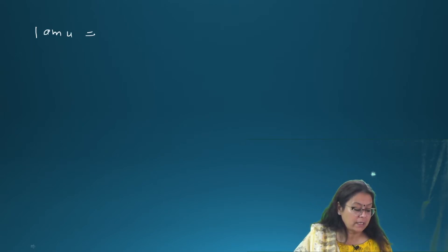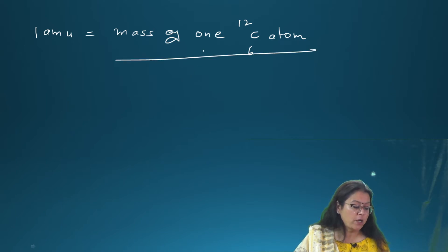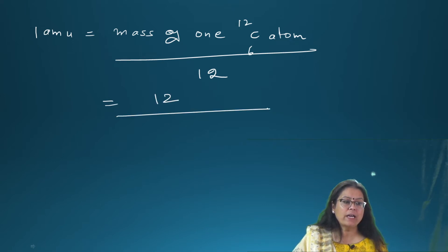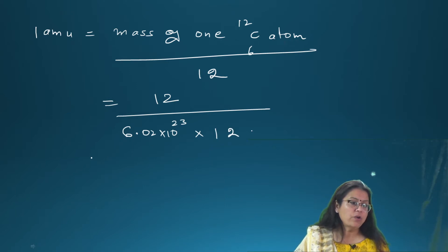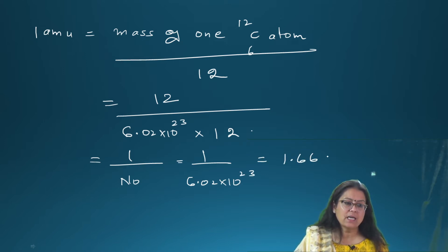AMU equals the mass of one atom divided by 12. So the mass of one atom of carbon-12 equals 12 divided by Avogadro's number (6.02 × 10²³) into 12, which gives 1.66 × 10⁻²⁴ grams. This is how you calculate one atomic mass unit.